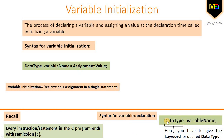The syntax for variable declaration is: data type, then space, then variable name, then a semicolon at the end, where you provide the keyword for the desired data type. For variable initialization, you do the same — data type keyword, space, variable name, then using the equal-to operator (also known as the assignment operator), you give the value as per the chosen data type. In short, variable initialization equals declaration plus assignment in a single statement.